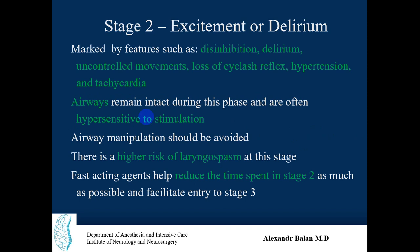Stage two is excitement or delirium, marked by features such as disinhibition, delirium, uncontrolled movements, loss of eyelash reflex, hypertension, and tachycardia. Airways remain intact during this phase but are often hypersensitive to stimulation. As an anesthesiologist, you should not perform evident airway manipulations at this stage, as there is a very high risk of laryngospasm. Fast-acting agents help reduce time spent in stage two and facilitate rapid entry into stage three.